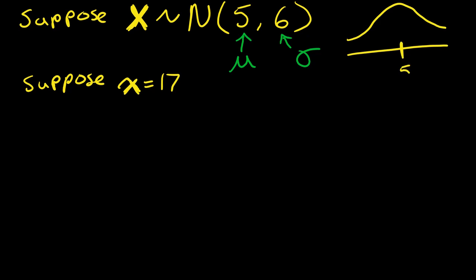It's very likely to be around 5 in the center near the mean, and less likely to be further to the sides. So little x is just one observation - it's over here to the right, way over here at 17.